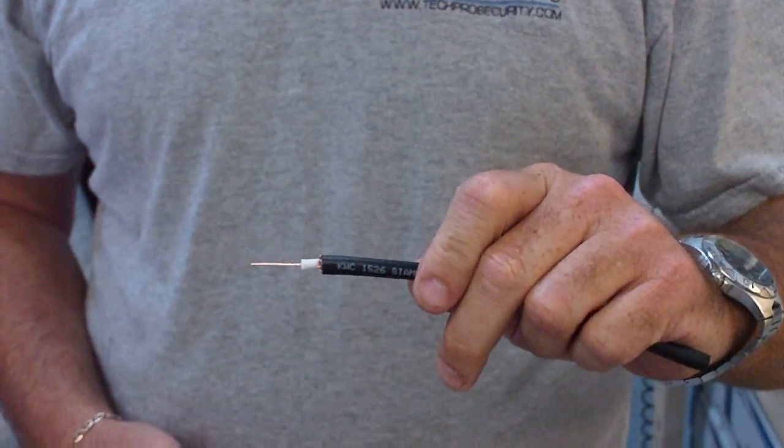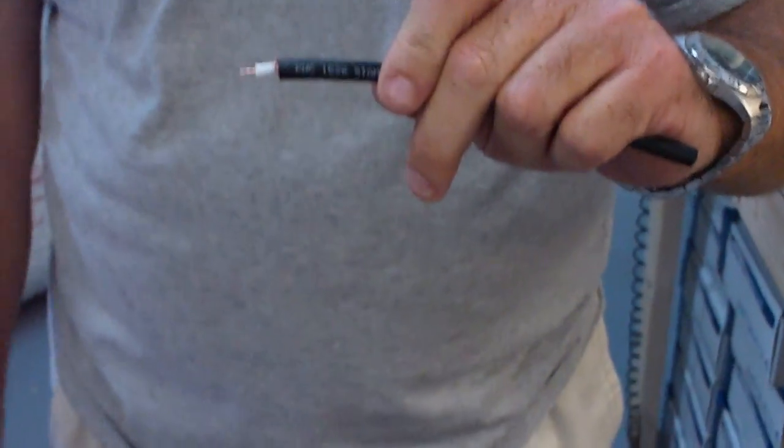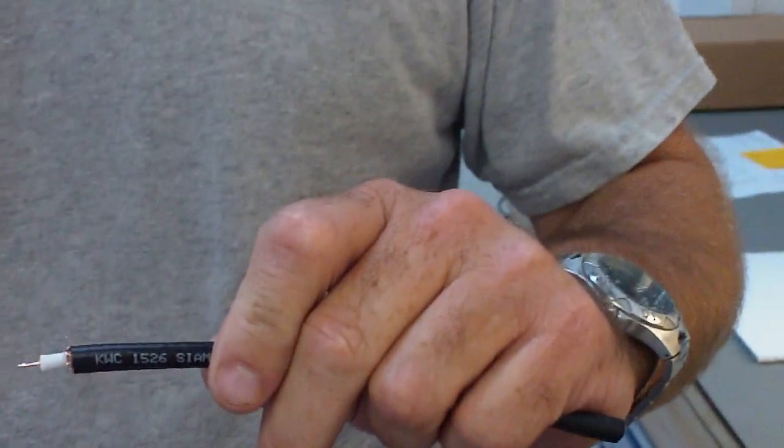You want to leave just enough copper, right now it's a little long, to get into the BNC connector. So you'll notice here as you compare that that's what it should look like right over here.